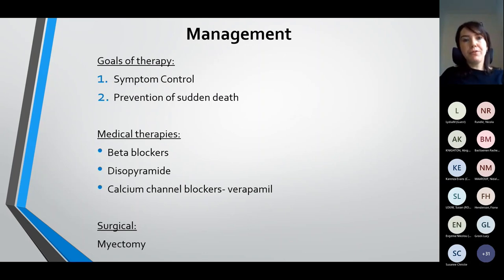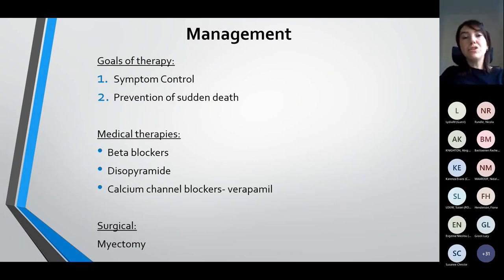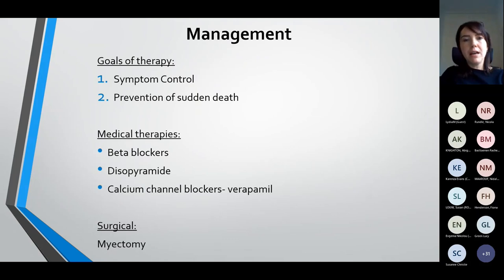In terms of management of hypertrophic cardiomyopathy in children, similar to adults, the goals of therapy are twofold: symptom control and prevention of sudden death. Importantly, we don't treat the echo and we don't treat the ECG — we treat the symptoms. So if a patient is completely asymptomatic with some LV outflow tract obstruction we wouldn't necessarily start medical therapy. The mainstay of therapies are beta blockers, disopyramide in those with outflow tract obstruction, and calcium channel blockers. Very rarely we do surgical interventions in the form of a myectomy, but only in a very carefully chosen group of patients.